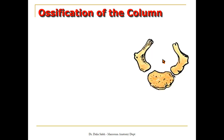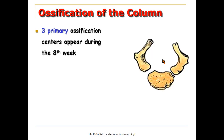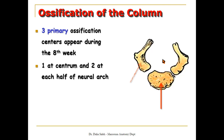After this, ossification of the vertebral column begins during the eighth week of development by the appearance of three primary ossification centers — one at the centrum and two on each half of the neural arch. Then five secondary ossification centers appear after puberty: one at the upper and lower lips of the body, one at each transverse process, and one at the spine.